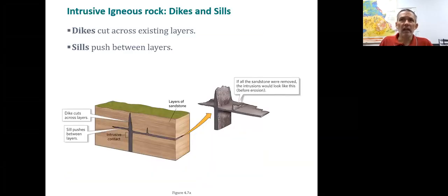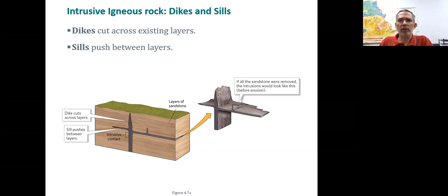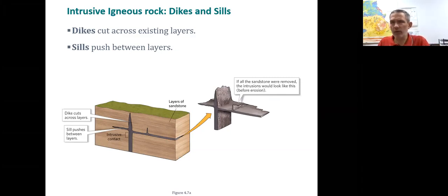If this lava or magma is cutting through the existing rock parallel to the existing rocks, we call that tabular feature a sill. The way I remember this is that sill has two L's in it and it's parallel to the existing rocks.